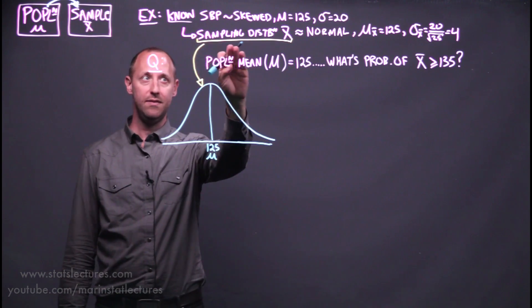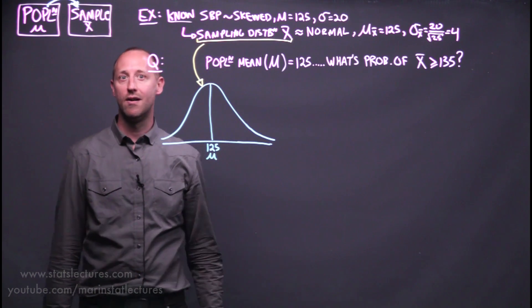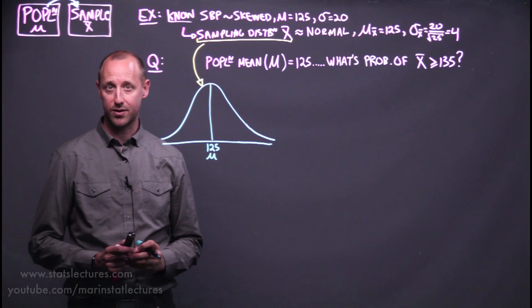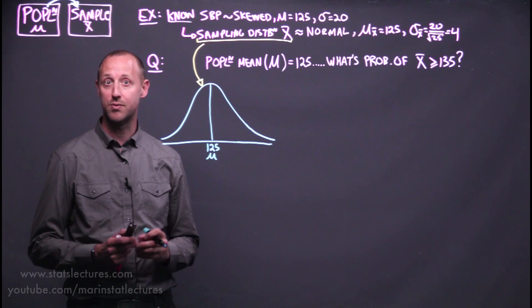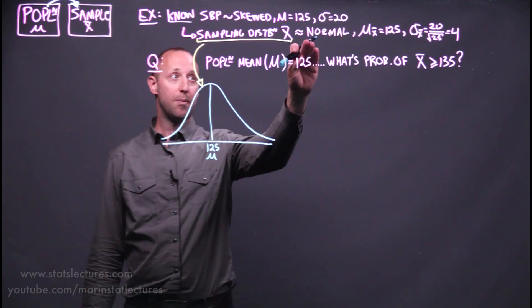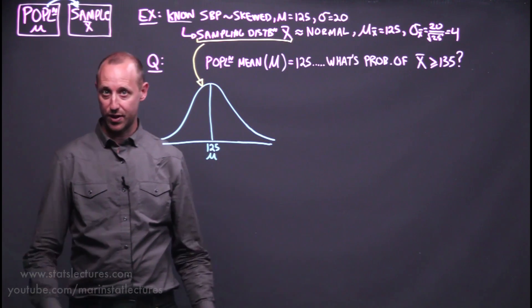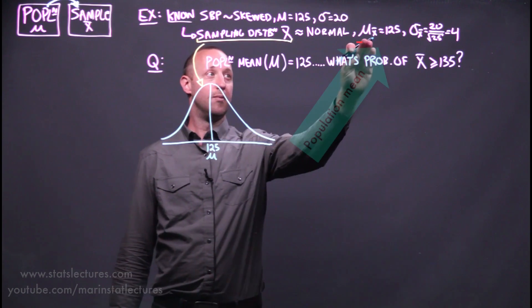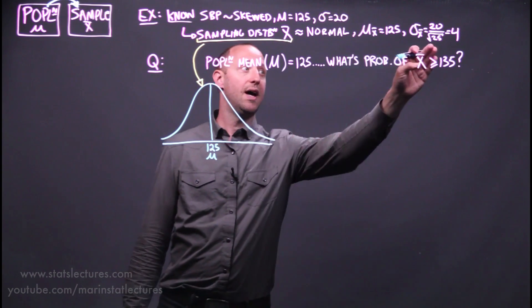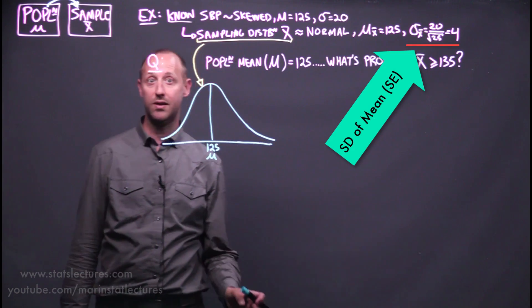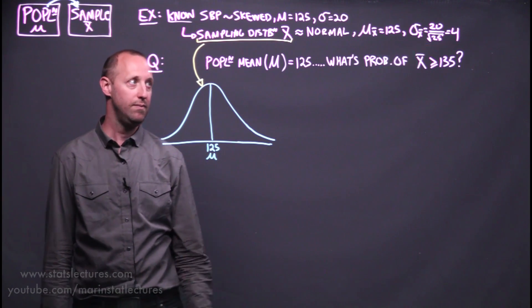We learned previously that the sampling distribution of the mean, this theoretical set of all the possible estimates we could end up with, is going to be approximately normal as long as a few conditions are met, with a mean of 125 and a standard deviation of the mean, or a standard error of the mean of 4.